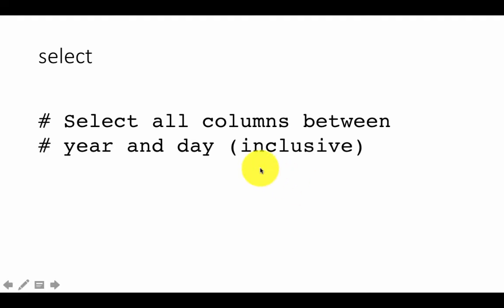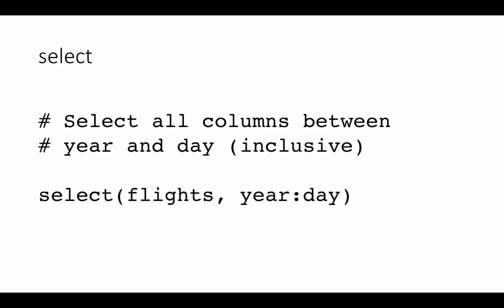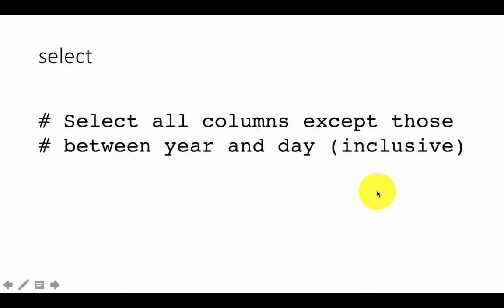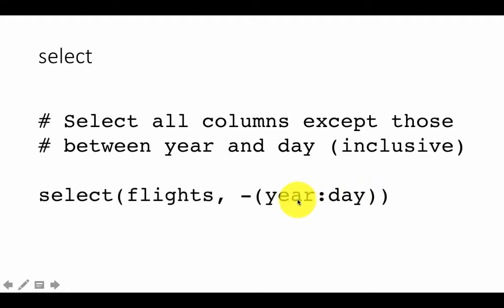You can also select all the columns between specific columns. For example, select all columns between year and day using the colon operator: select(flights, year:day). Or you can select all columns except those between year and day using a minus sign: select(flights, -(year:day)). Note the parentheses here — that's because of operator precedence. The unary minus has higher precedence than the colon, so without the parentheses you won't get the results you want.